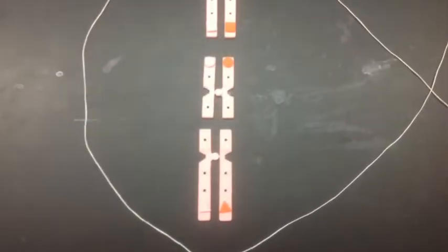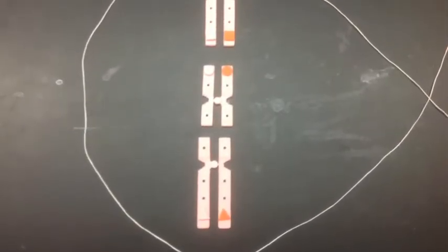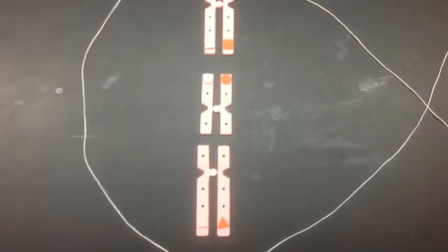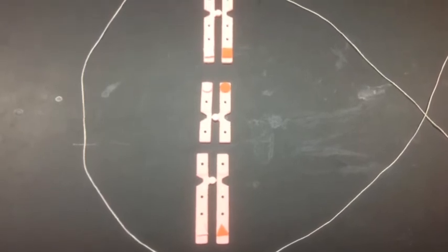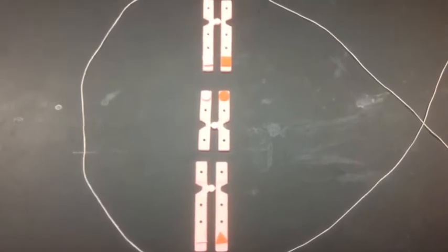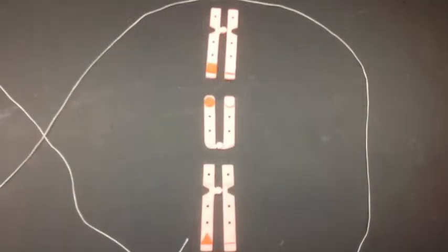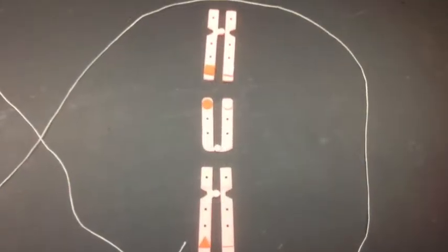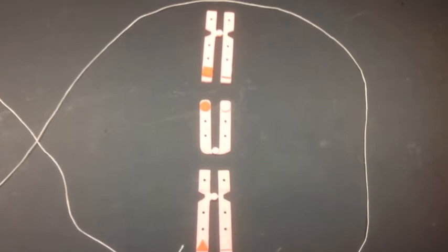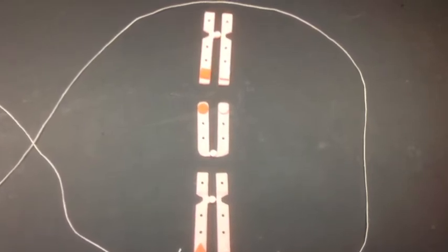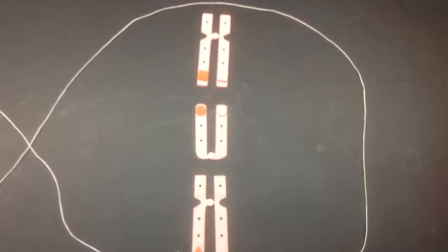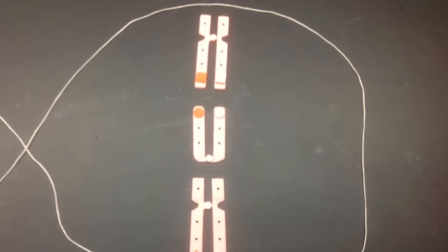Each pole ends up with a complete haploid set of chromosomes consisting of one member of the homologous pair. During telophase I, the nuclear membrane reforms around the daughter nuclei. Each daughter nucleus contains two sister chromatids for each chromosome, attached to a certain centromere. Because of crossing over, the two sister chromatids are not identical.